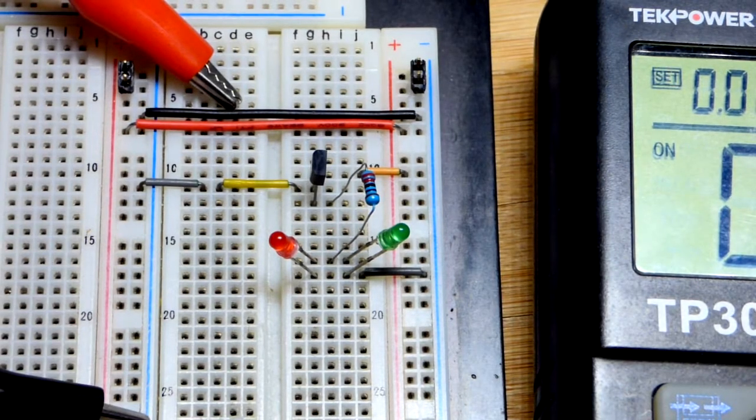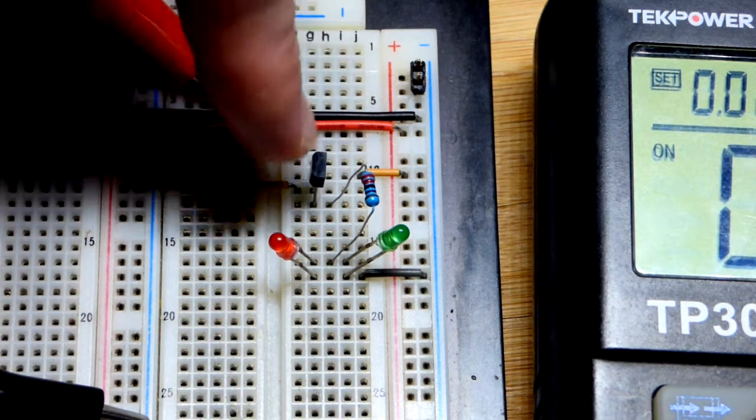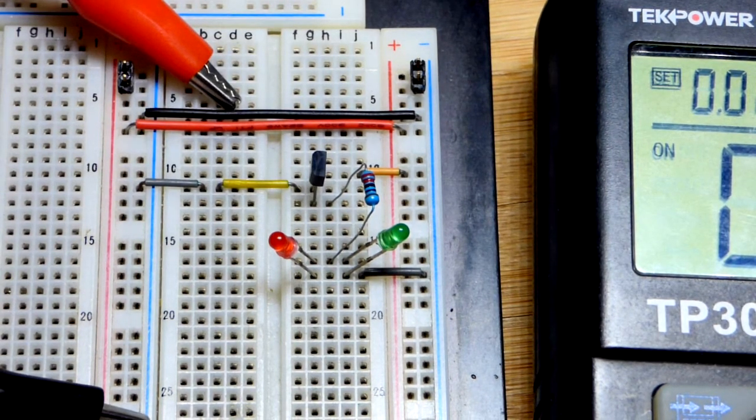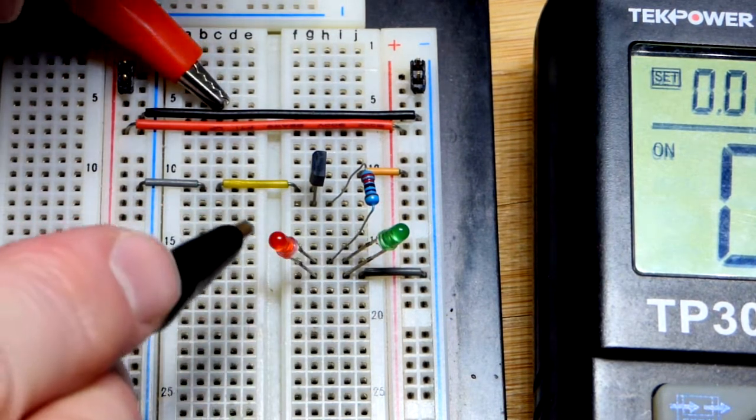In the last video we looked at the P-channel MOSFET as a switch. It's wired to be turned on, but the main thing is that we have a polarity indicator here.